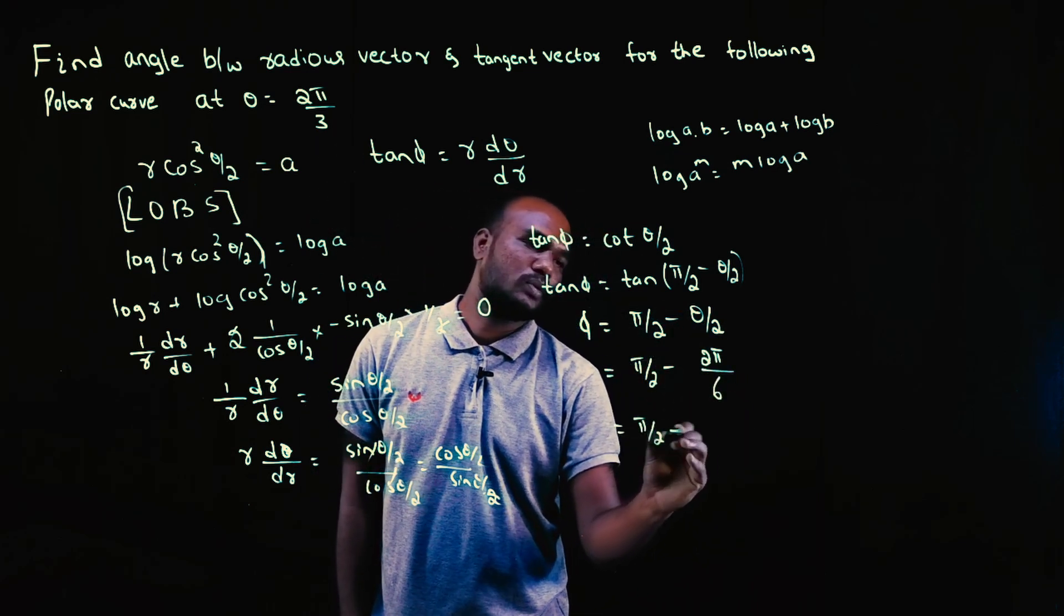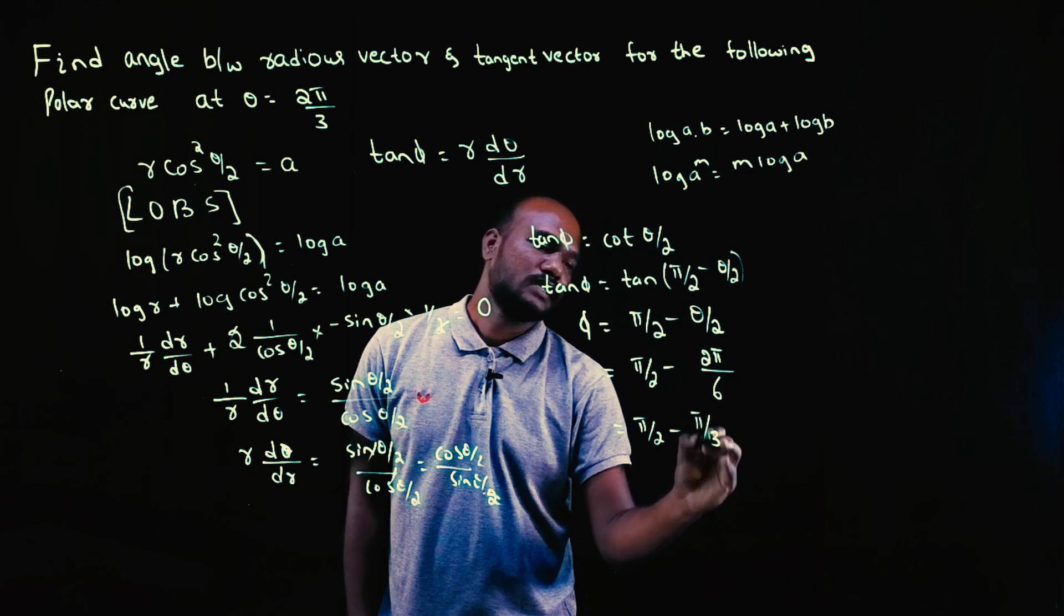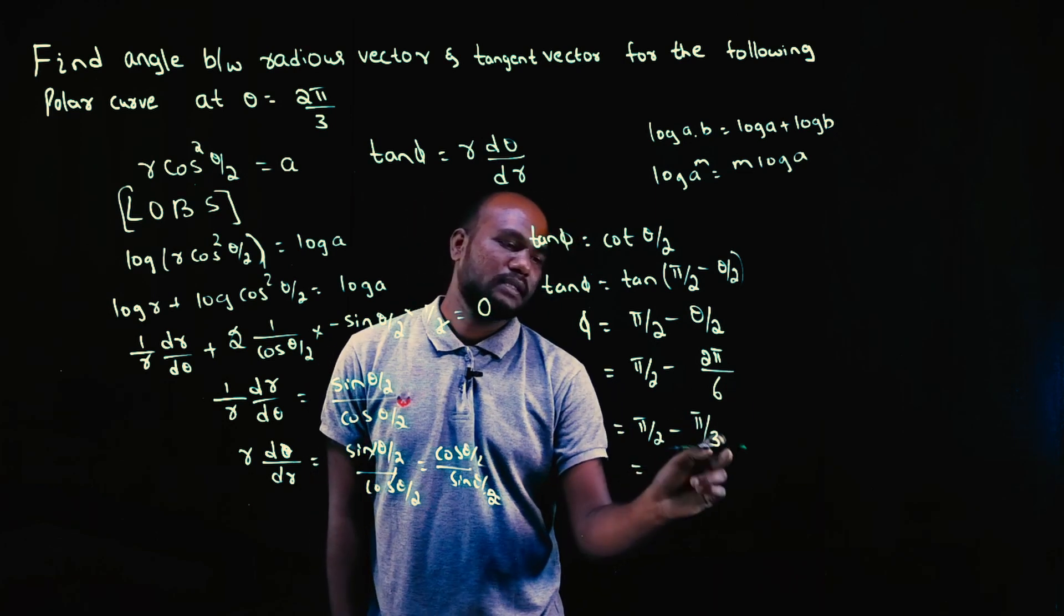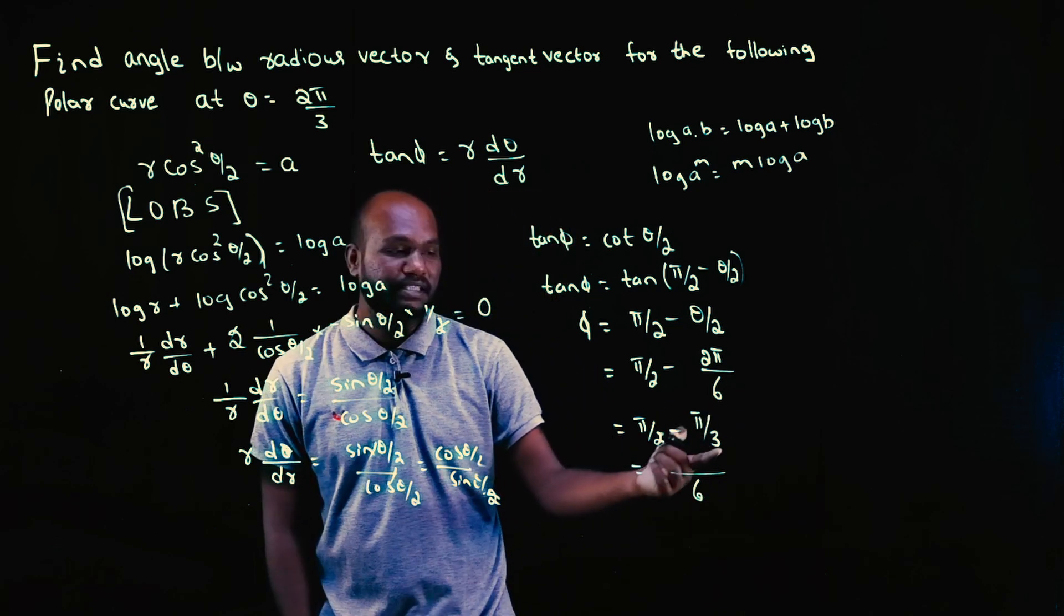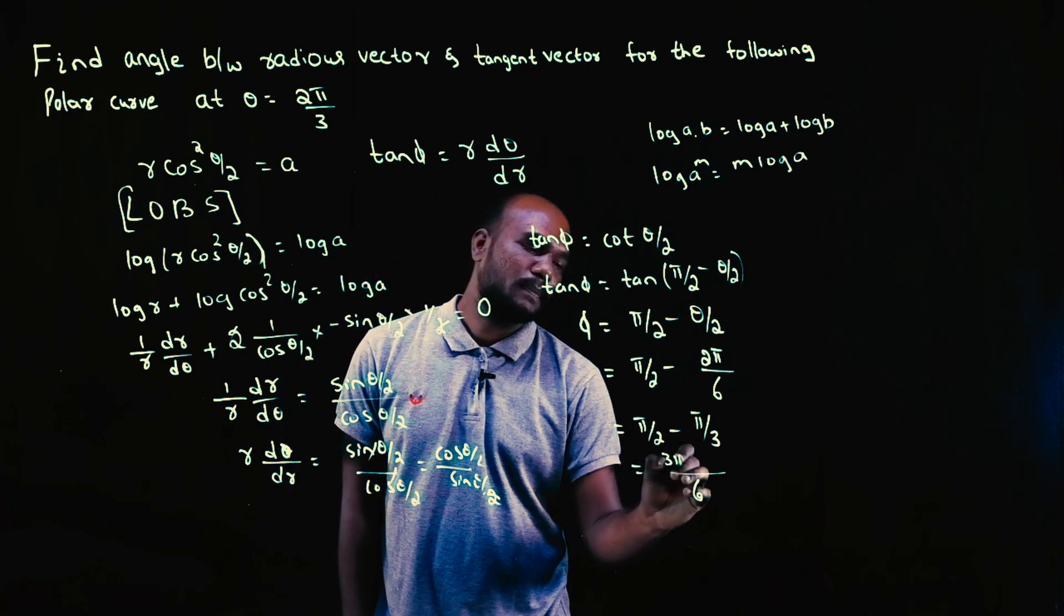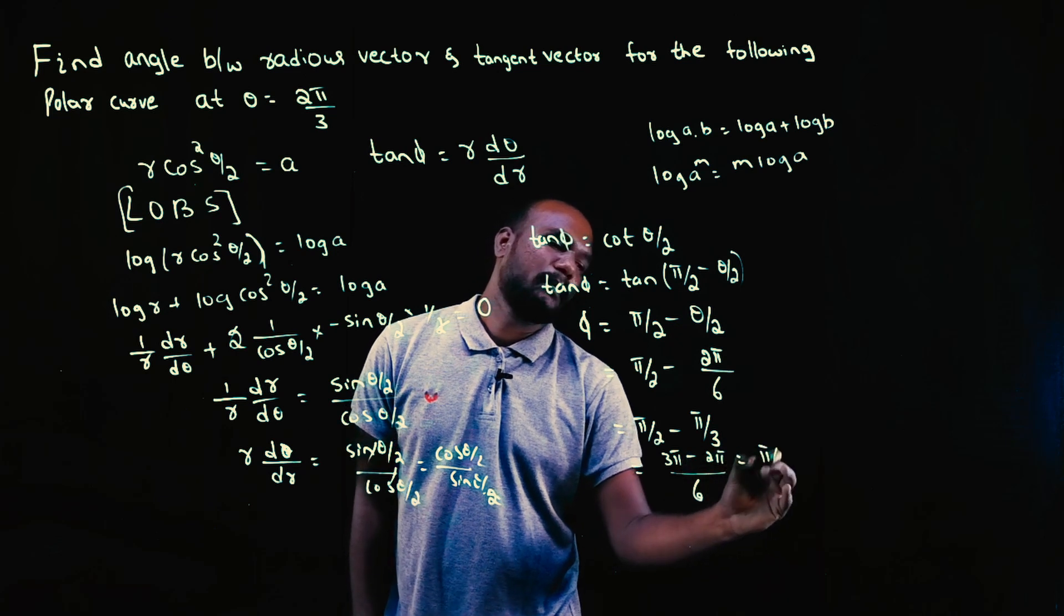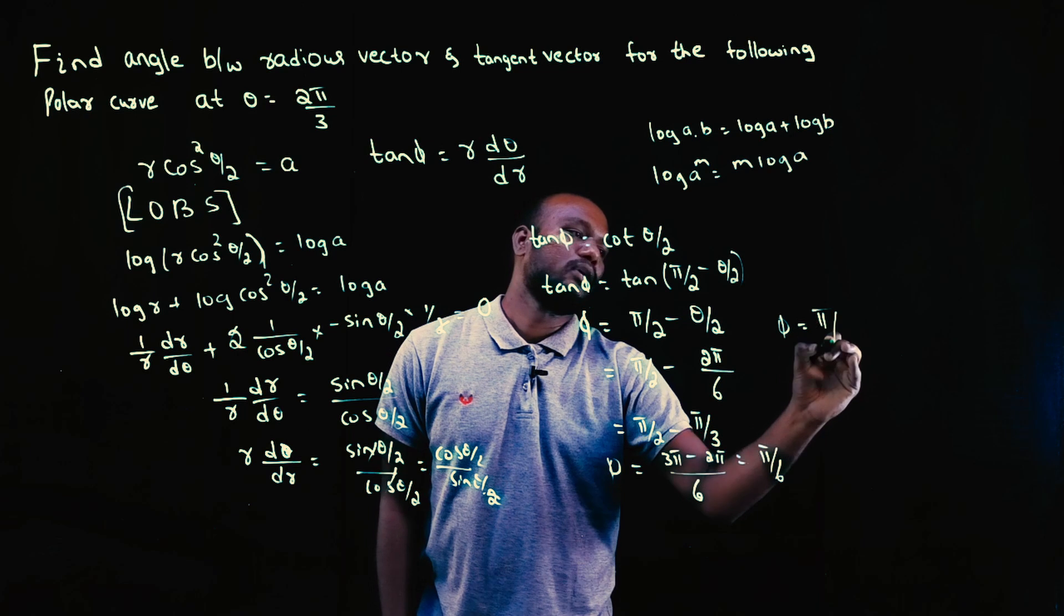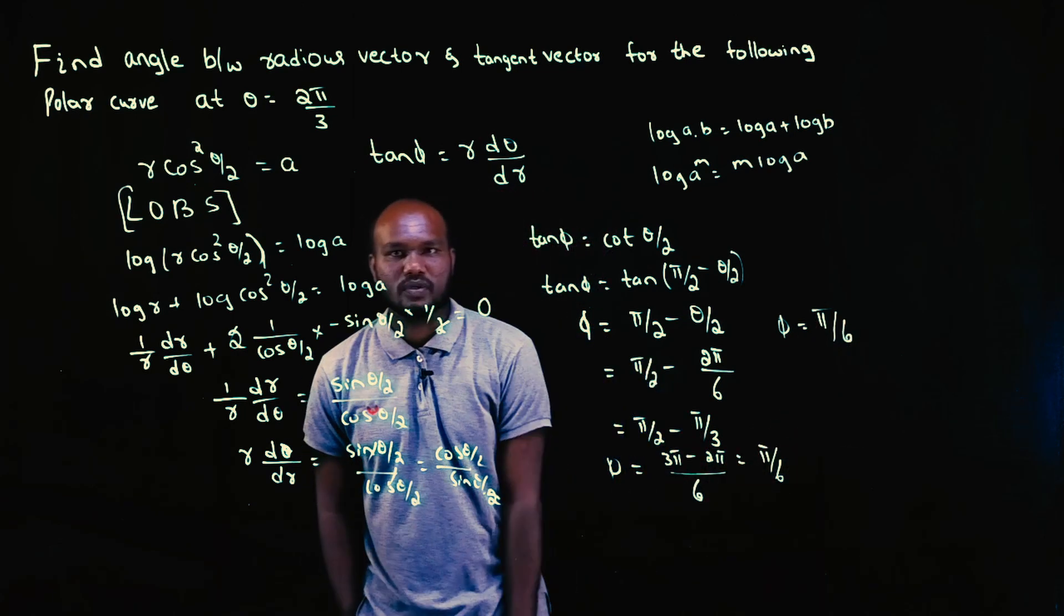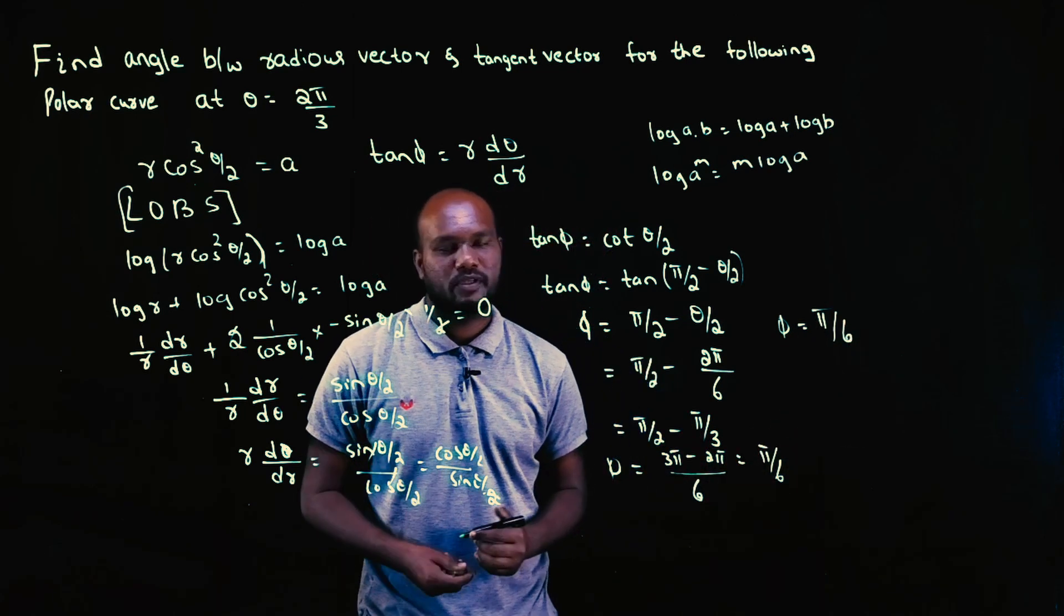2 pi upon 3 into 2 is 6. So this will become pi over 2 minus 2, 1 or 2, 3s are, so pi over 3. So from here 3 into 1, the LCM is 6. 2 3s are, so 3 pi minus 2 pi. How much is that? Pi over 6. This is the value. Phi value is what? Pi over 6. Is that okay? Yes?